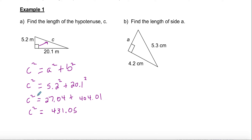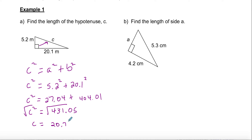So c² = 431.05. That might seem large, but remember c² is not the side length yet. To unsquare it, take the square root of both sides — that gives you side c. Taking √431.05 gives 20.76 meters, which makes sense: the hypotenuse always has to be the biggest side, and 20.76 is just a little bigger than the 20.1 leg.